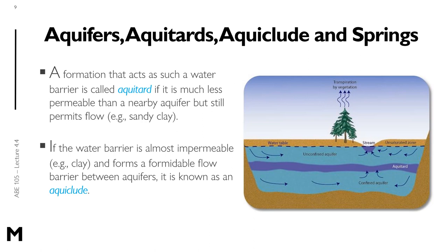If the water barrier is almost impermeable — for example, clay — and forms a formidable flow barrier between aquifers, it is known as an aquiclude. The difference between an aquitard and an aquiclude: an aquitard permits some flow but at a lesser rate, while an aquiclude is almost completely impermeable, permitting virtually no flow. Examples of aquicludes include clay, which is impermeable.